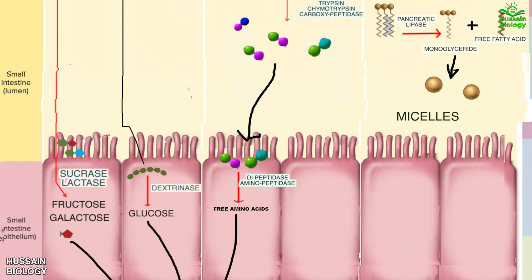After that the micelles from the small intestine enter into the brush border as shown in the diagram. Within the epithelium of small intestine these micelles are reconverted into monoglycerides and free fatty acids. Both these combine together, that's monoglycerides plus free fatty acids, and we get the formation of triglycerides.